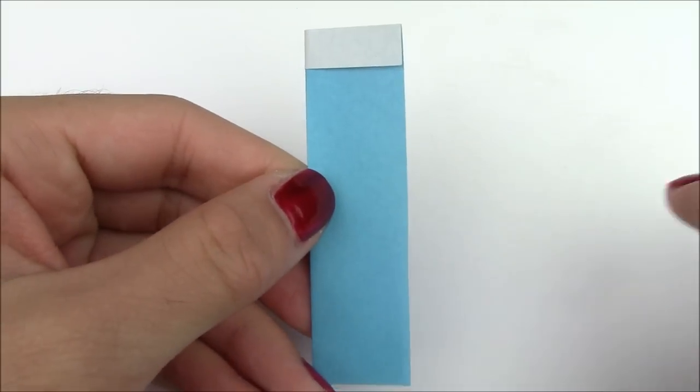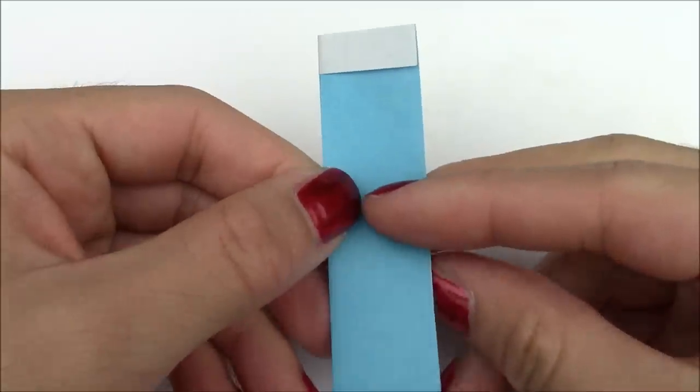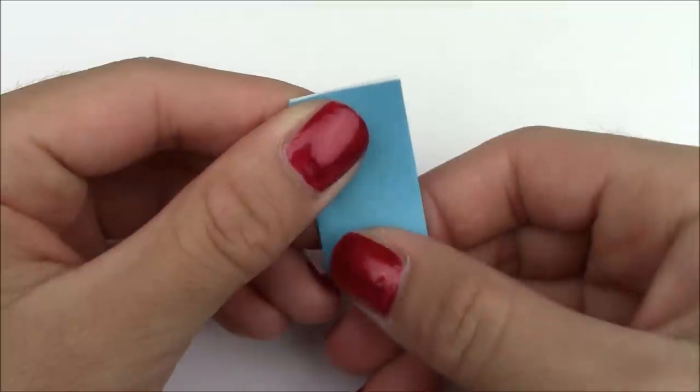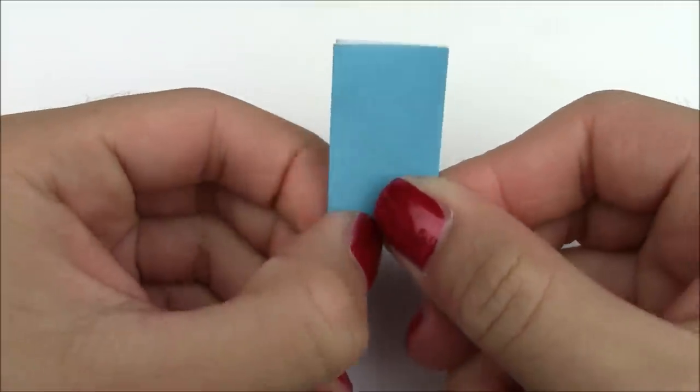Now with this opening facing the right side, you're going to fold the entire thing in half like this. Crease it in.